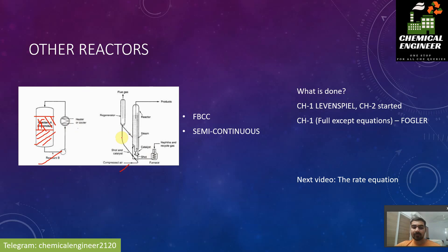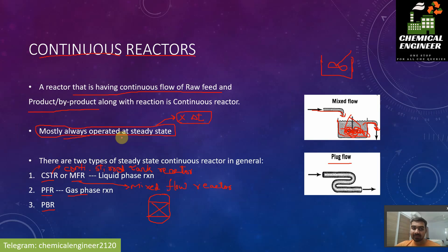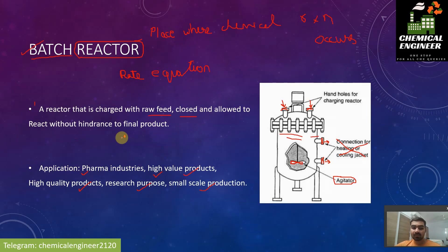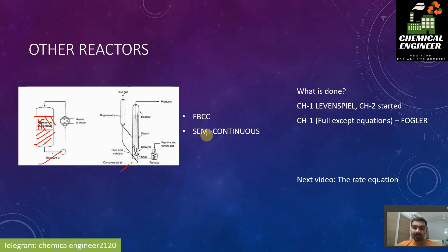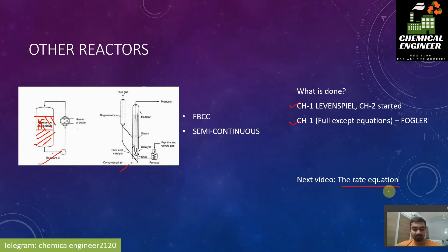This is enough for you to remember about batch reactors and continuous reactors. In the next video we will see how to design those reactors and what the governing equations are. Up till now we have covered chapter 1 of Levenspiel and started chapter 2, and we have completed chapter 1 of the Fogler book. Please go through them and if you have any doubt, ask in the comments. The next video will be based on the rate equation. Thank you for watching, see you soon.